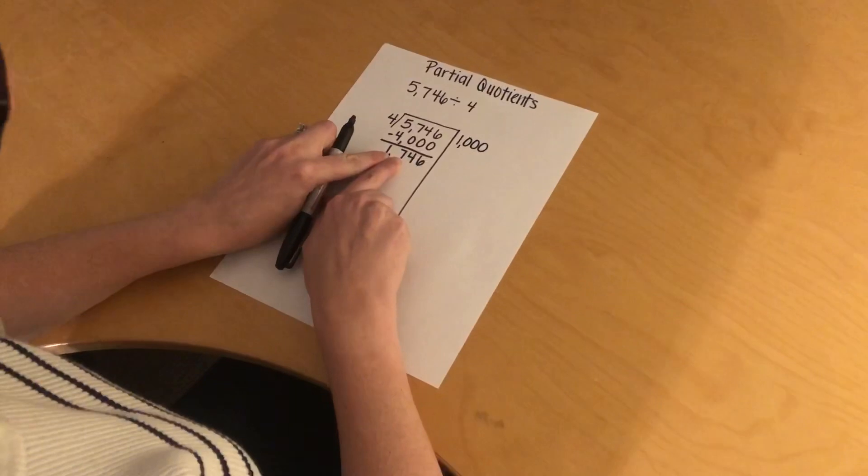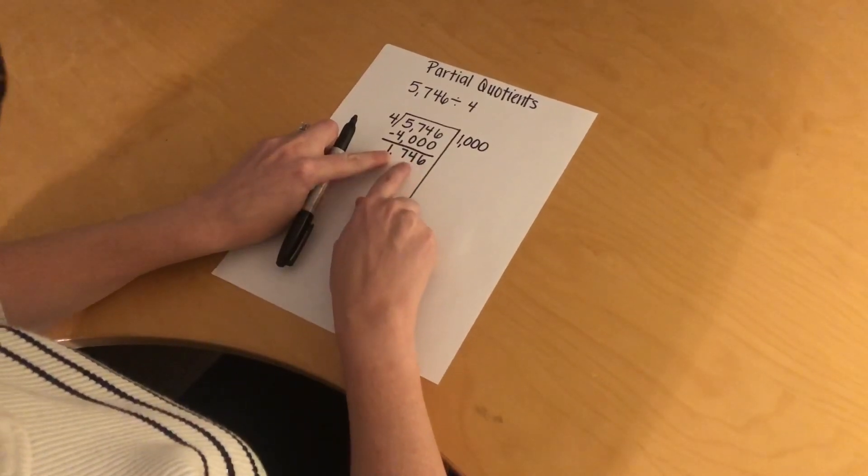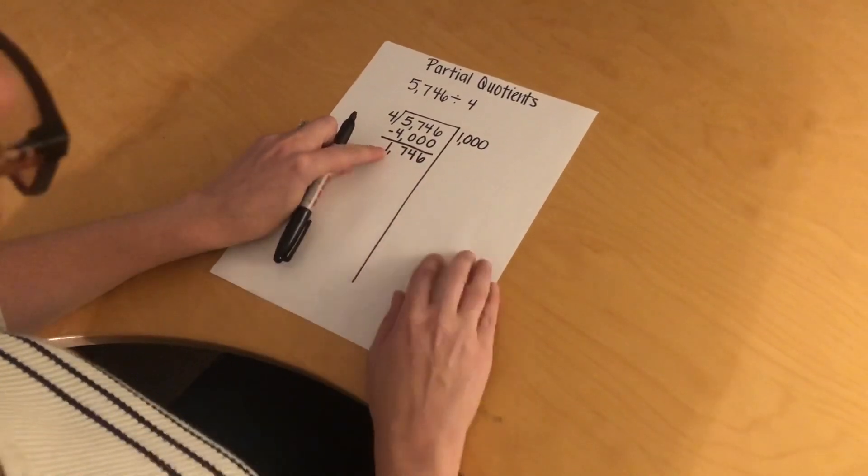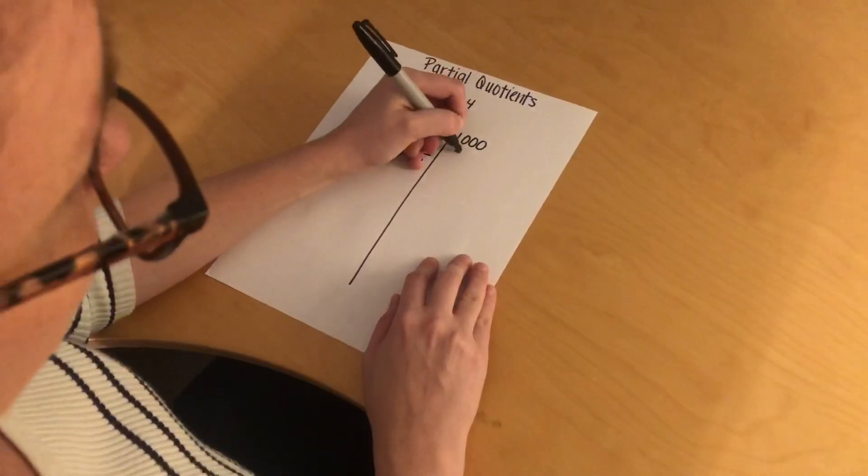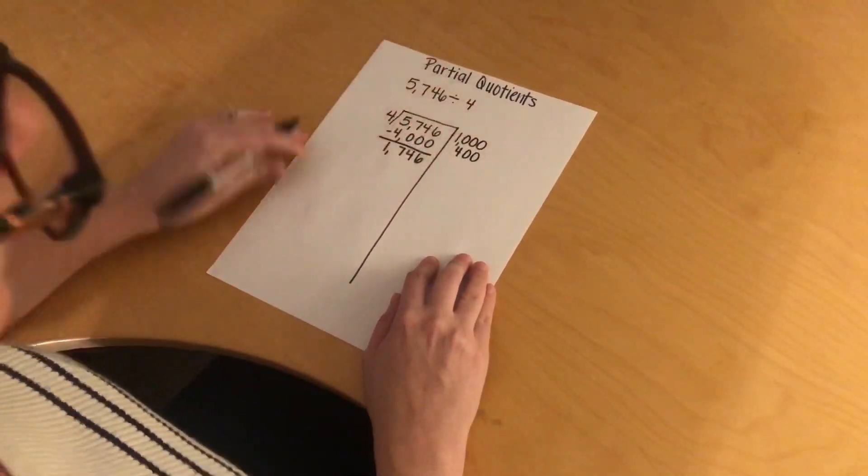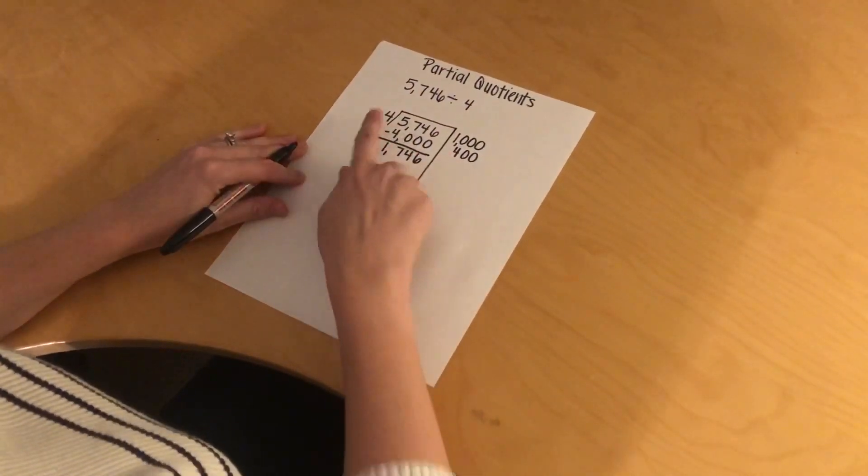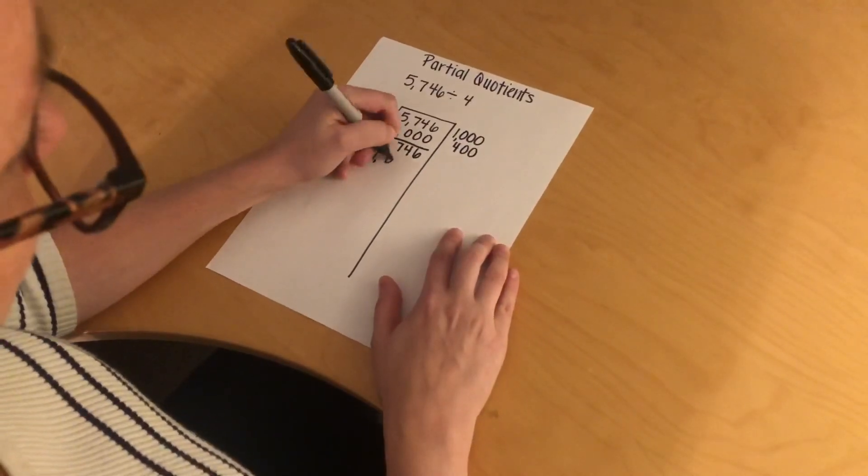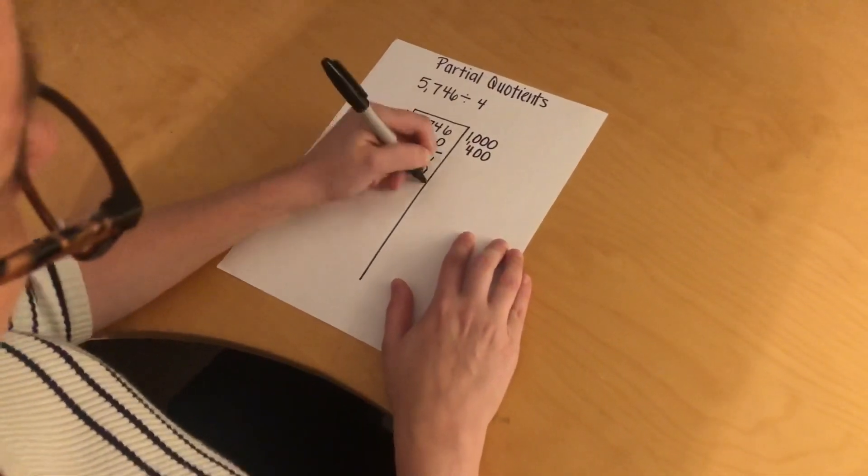Yes, it can go in 4 times, and there are 2 digits after the 17, so I'm going to put 2 zeros after my 4, so it is 400. I'm going to multiply 400 times 4, and I get 1,600, and then I subtract,